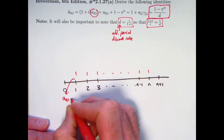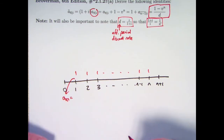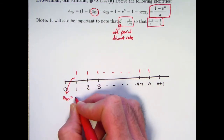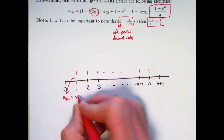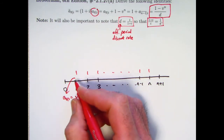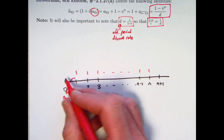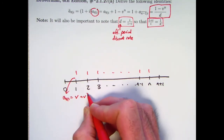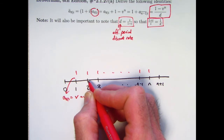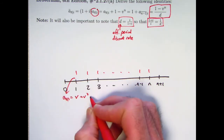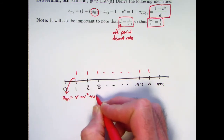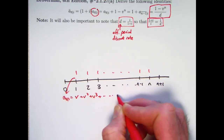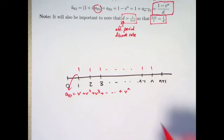Let's write this out as a series. That would be v — the present value of the first payment — plus v squared for the second payment at time 0, plus v cubed, etc. The last one will be v to the n.